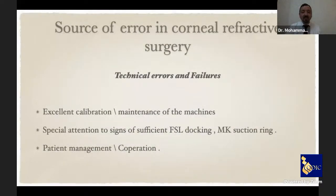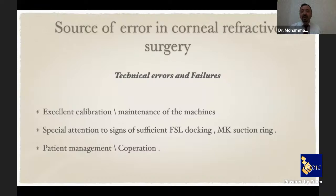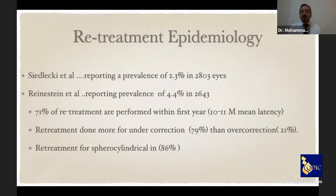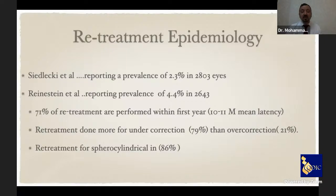The excimer nomogram plays an important role. Technical errors such as machine calibration, suction docking, and patient cooperation all contribute to over and undercorrection. In real-world data, Sguritsky et al. reported a retreatment prevalence of 2.3% in 2,800 eyes; Rheinstein reported up to 4.4% in 2,643 eyes. About 71% of retreatments were performed within the first year, with a mean waiting time of 10 to 11 months.